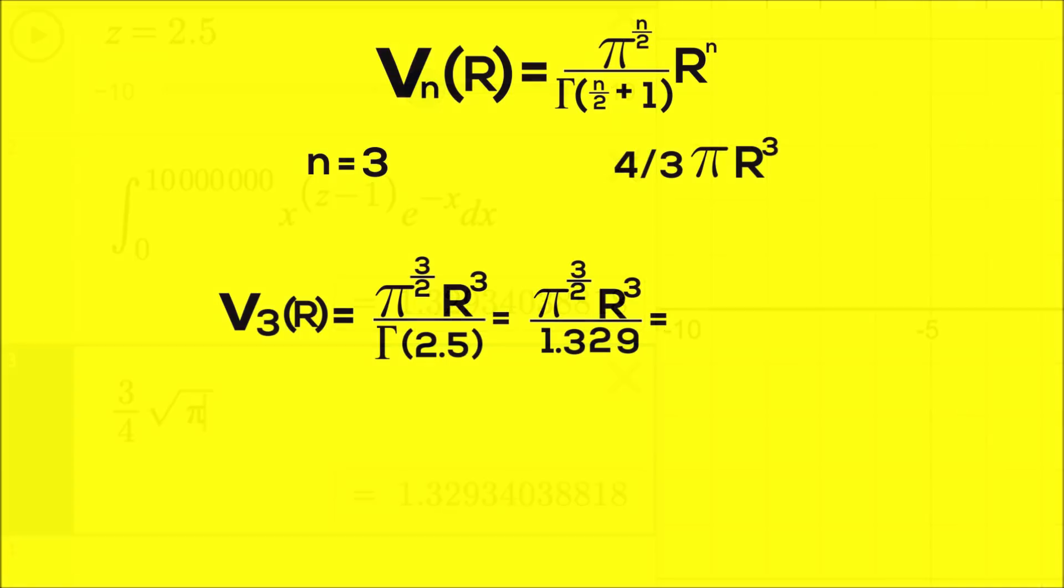So we go back and put that value in the denominator, but since it can be written as 3 fourths times the square root of pi, everything will simplify to 4 thirds pi r cubed.